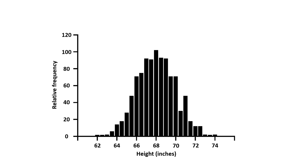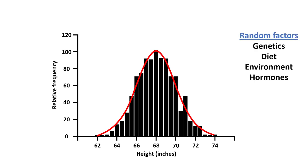Now let's take a look at an example of a sample that resembles a normal distribution. Here is a frequency distribution of the height of 1,000 children aged 18 years old. Height is measured in inches. Notice that if we superimpose a regression line on this histogram, we can see a normal distribution with that characteristic bell-shaped curve. The reason for this is because height is a measure determined by various random factors, which can include genetics, diet, environmental influences, hormones, etc.